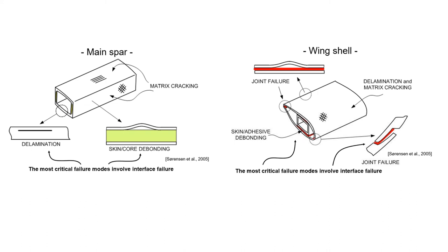Typical failure modes in blades — especially in the main spar part and wing shell — are shown. The most critical failure modes involve interphase failure, including delamination, skin-core debonding and matrix cracking. In the wing shell part, failure occurs via skin-adhesive debonding, joint failure, delamination and matrix cracking, and joint failure at the edges.